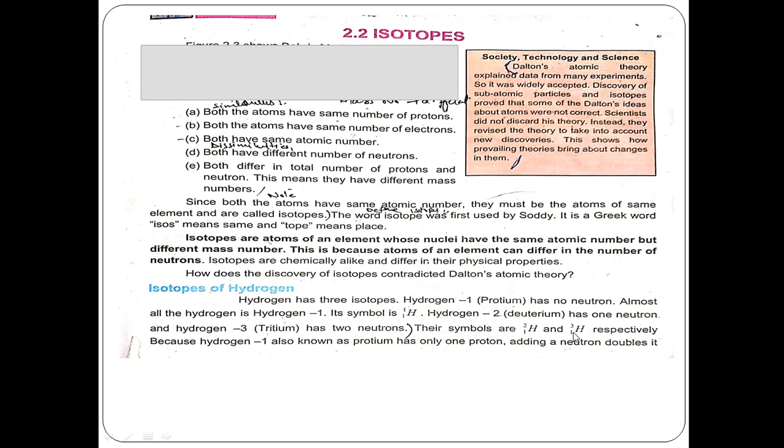For tritium: 1 proton, 1 electron. Number of neutrons = mass number minus number of protons = 3 minus 1 = 2 neutrons.